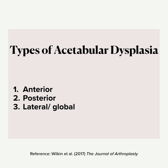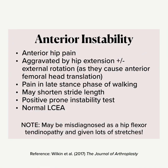Wilkin et al. describe three main types of acetabular dysplasia: anterior, posterior, and lateral or global. With Type 1 — anterior instability — people present with anterior hip pain aggravated by hip extension, particularly with external rotation, and any movements causing anterior femoral head translation due to lack of acetabular coverage anteriorly. This includes pain in the late stance phase of walking, and patients may compensate by shortening their stride length — you may see a slower gait and reduced stride length in walking and running.